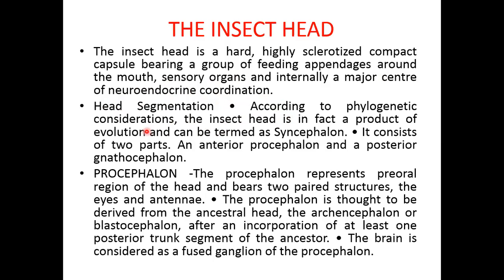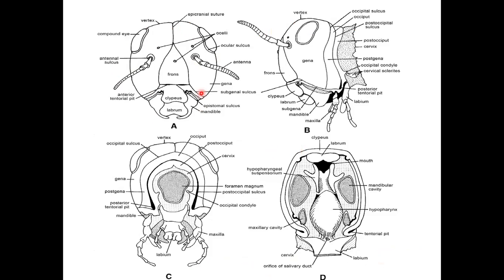In phylogenetic consideration, the insect head is in fact the product of evolution and can be termed as a syncephalon. It consists of two parts: the procephalon and the gnathocephalon. The procephalon represents the pre-oral region of the head, bearing paired structures — a pair of eyes and a pair of antennae. The procephalon is thought to be derived from the ancestral head archicephalon. The brain is considered a fused ganglion of the procephalon.